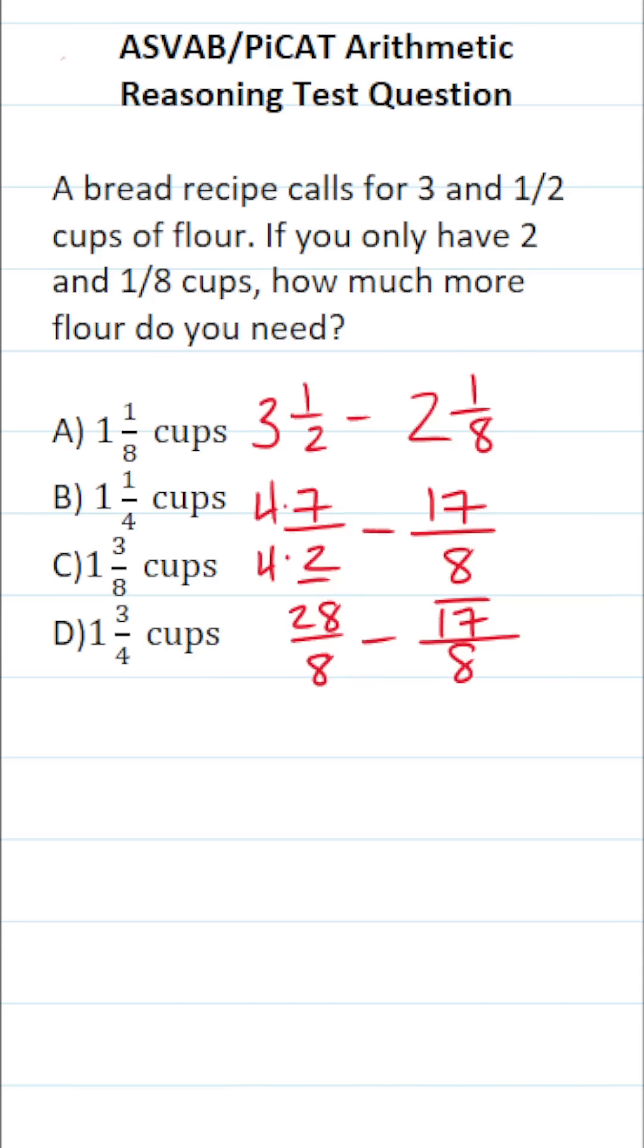Now that we have a common denominator, all we have to do is subtract. We're not going to change our denominator, but this becomes 28 minus 17 over eight, which is going to be 11 over eight.